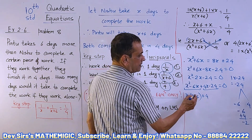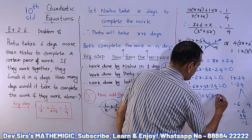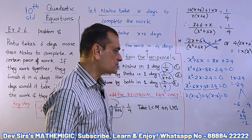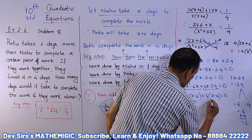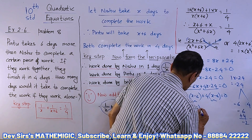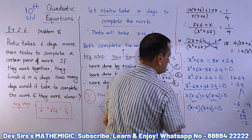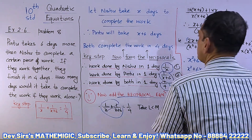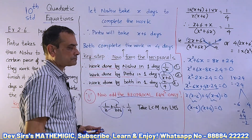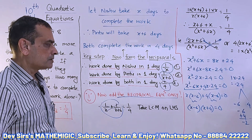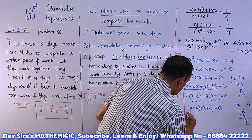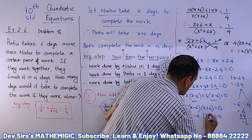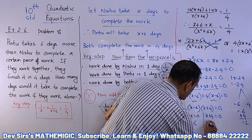Substituting: x(x−6) + 4(x−6). The bracket (x−6) gets repeated — because 4×x = 4x and 4×(−6) = −24. Now (x−6) is common, so we factor it out: (x−6)(x+4) = 0. Setting each factor to zero: x−6 = 0 gives x = 6, or x+4 = 0 gives x = −4.